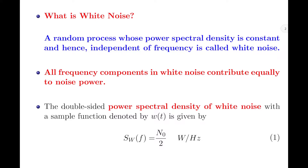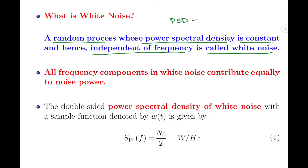Coming to the topic of this discussion, let us start by asking: what is white noise? A random process whose power spectral density is constant and hence independent of frequency is called white noise. In simple words, a random process with power spectral density as a constant can be considered to be white noise.